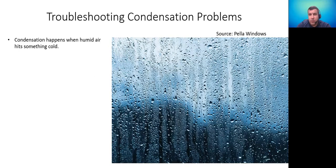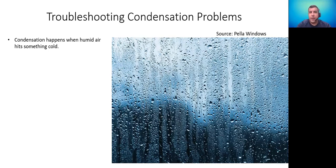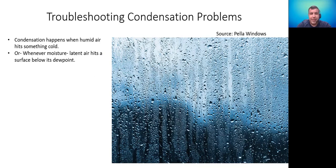Troubleshooting condensation problems. We go on a lot of condensation service calls, especially in high humidity areas. Condensation happens when humid air hits something cold — for example, if it's a hot, humid day and you have a cold drink in your hand, the outside of the can starts sweating. That is condensation. Another way of saying it: when moisture-laden air hits a surface below its dew point. Air at any given point has a dew point at which it's completely saturated. If it cools down more, or hits a surface below that dew point, condensation will form on that surface.